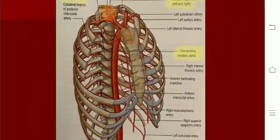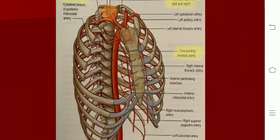The arch of aorta continues down as the descending thoracic aorta, which passes through the aortic opening in the diaphragm and continues as the abdominal aorta. The descending thoracic aorta gives posterior intercostal arteries to the lower nine spaces. In the upper spaces, the branch comes from the costocervical trunk.